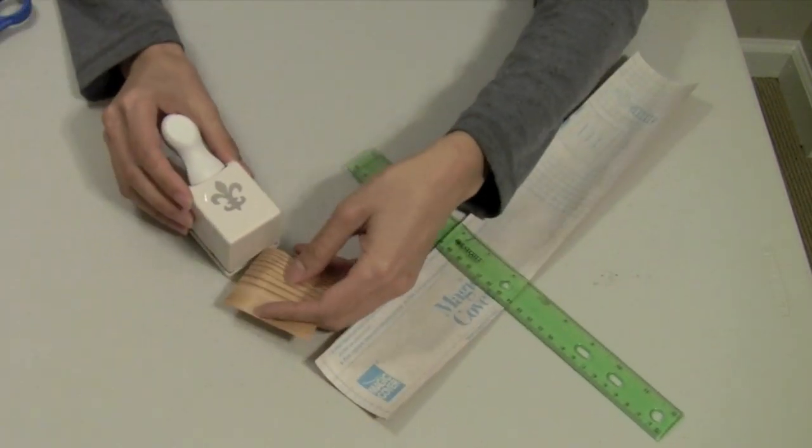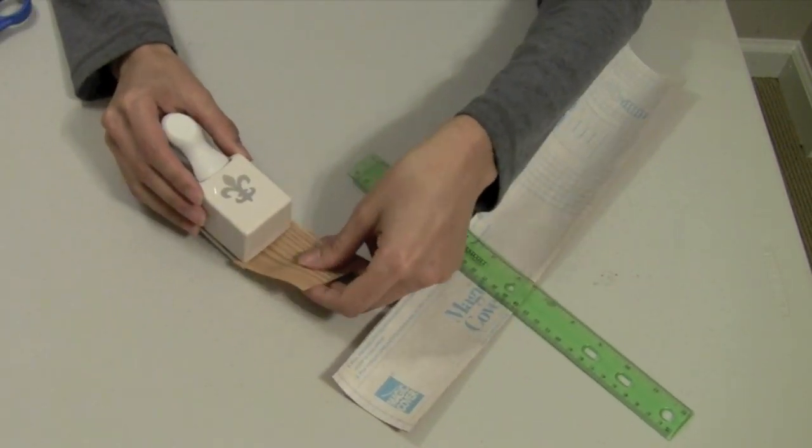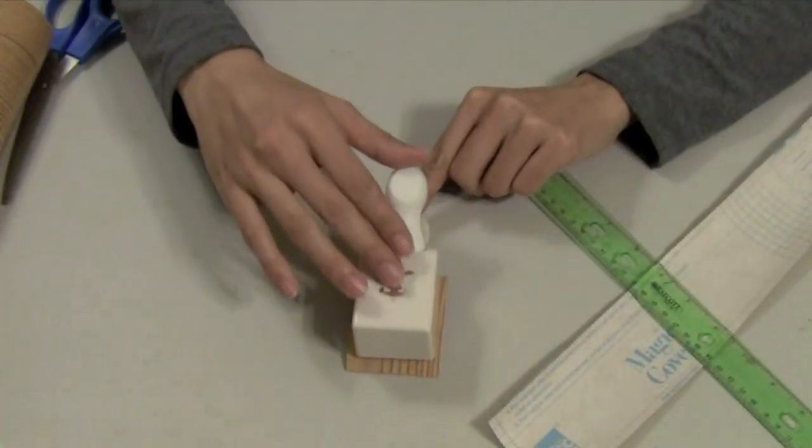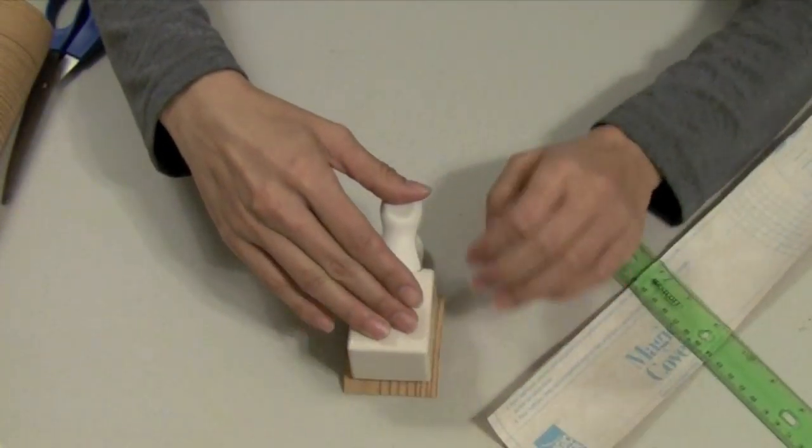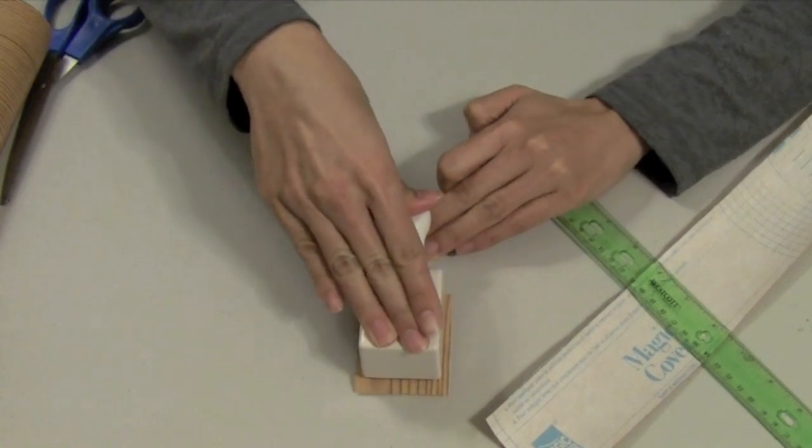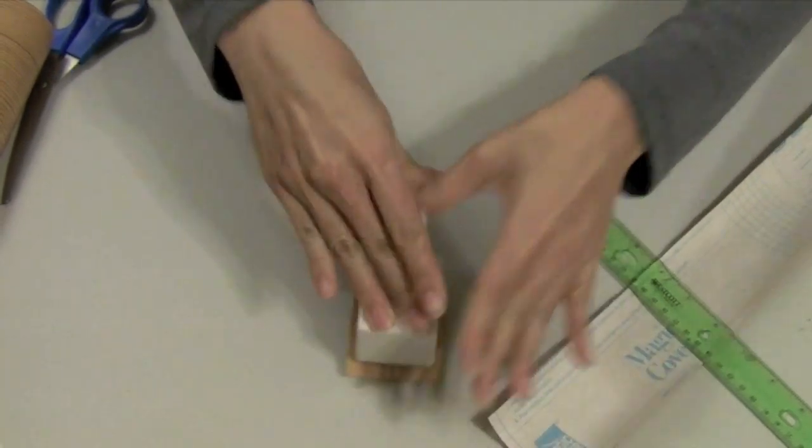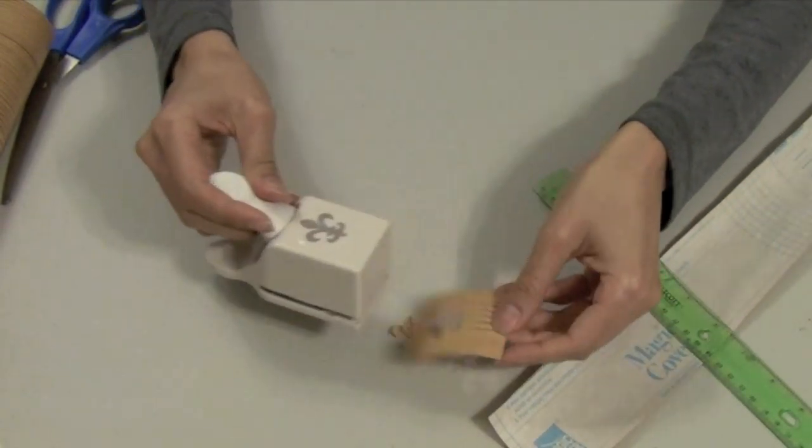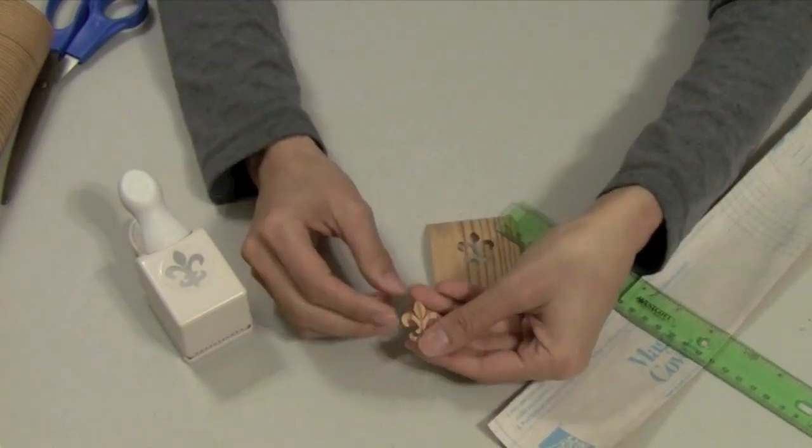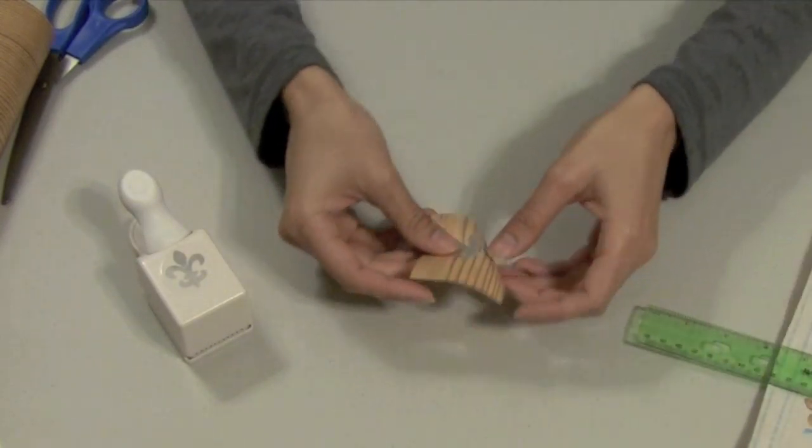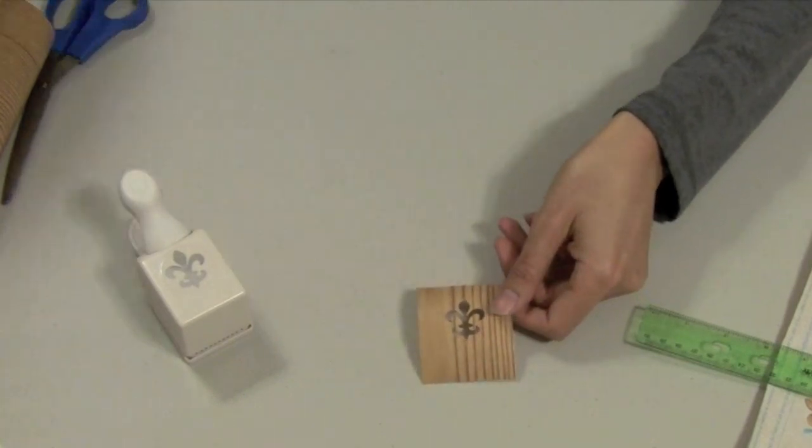And then, this is the easy part here. We take our hole puncher and we just line it up and punch through the contact paper. And as you can see, it's a nice little fleur de lis left over, and then we've got our design here.